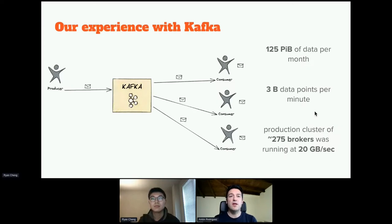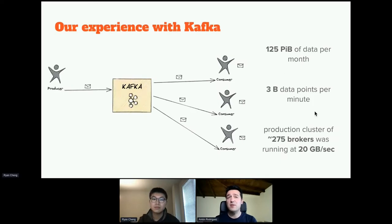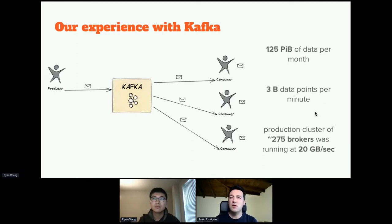Just to give you some numbers: we ingest around 125 petabytes of data per month and it's growing every day — more than three billion data points per minute. Our biggest Kafka cluster has around 275 machines, or brokers in Kafka terminology, with average traffic of 20 gigabytes per second, and that's just the traffic through Kafka — there is also internal traffic so it's much more than that. Being completely honest, operating something so big was quite painful. We had the feeling we were pushing the technology to the limit with such a big cluster, so we split it into smaller ones as part of our cloud journey.